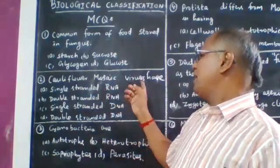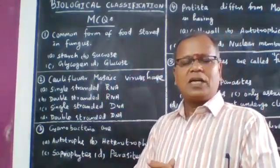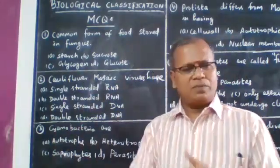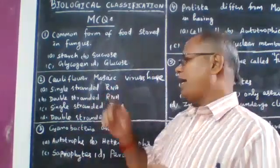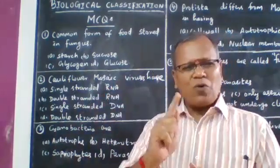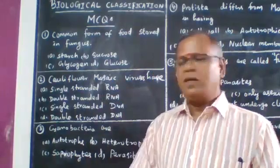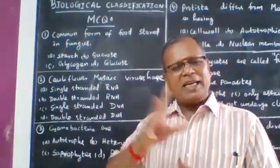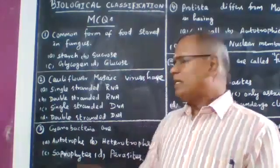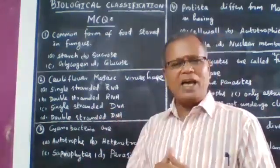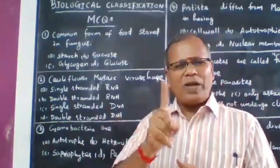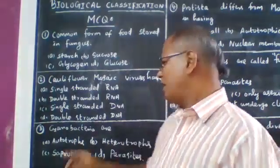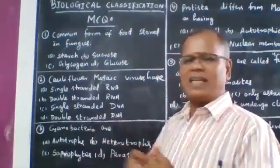Next question: Cauliflower mosaic virus has which type of genetic material? The options are: single-stranded RNA, double-stranded RNA, single-stranded DNA, and double-stranded DNA.